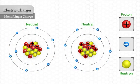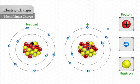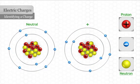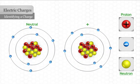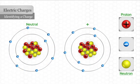However, if the atoms of an object lose some of their electrons, that object becomes positively charged because there are now more positively charged protons than negatively charged electrons.